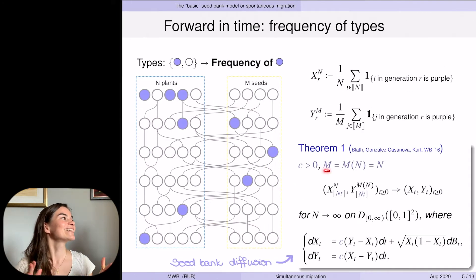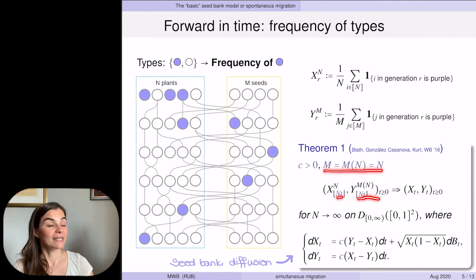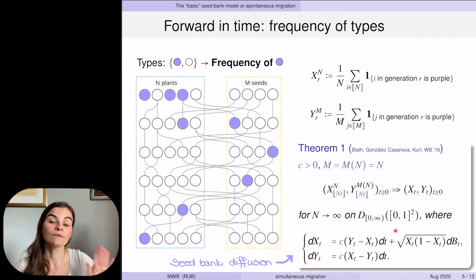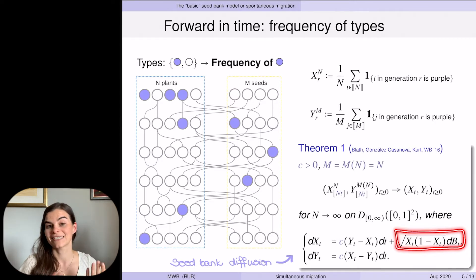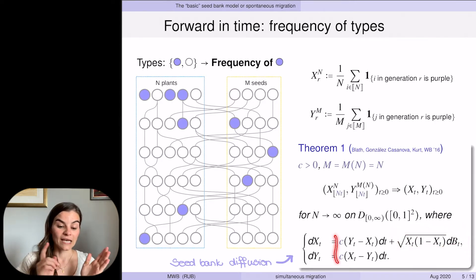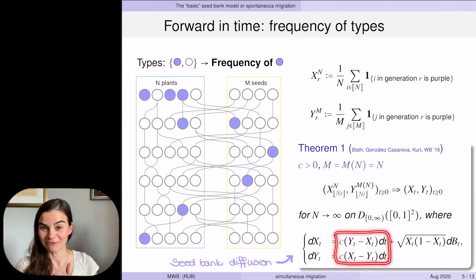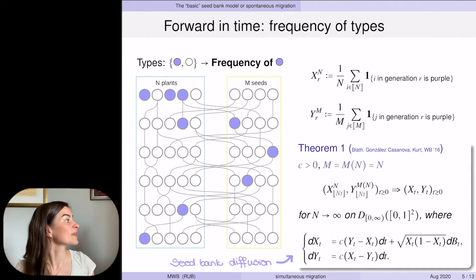If we scale the size of the seed bank with the size of the active population and use that same scaling for time, we get a limit which is the seed bank diffusion. In this diffusion, the only source of randomness is in the active population, and it's precisely given by this term that you will probably recognize as a Wright-Fisher diffusion term or genetic drift. Whereas the probabilistic drift of the diffusion up front is precisely describing the mechanism of transition in and out of the seed bank.